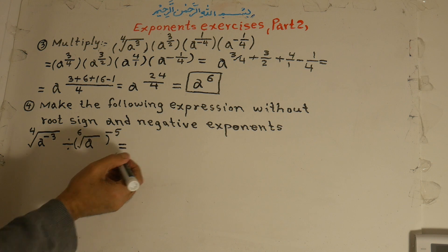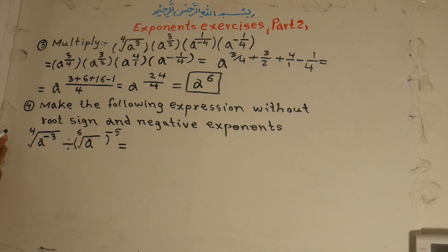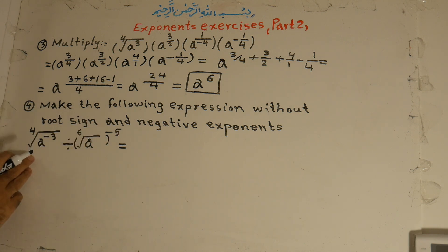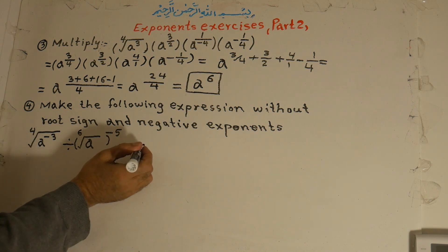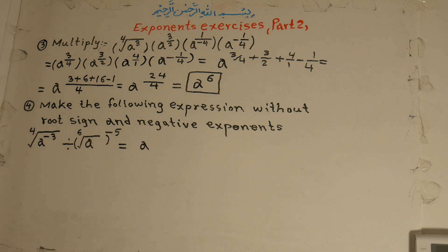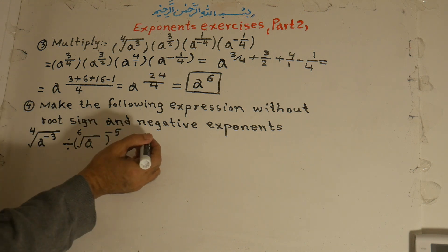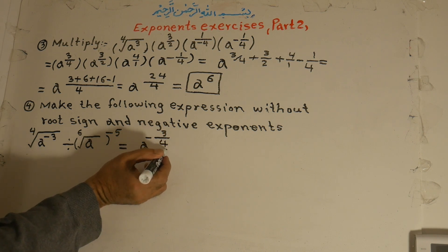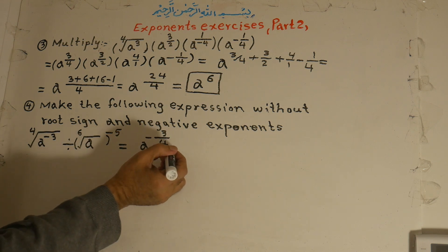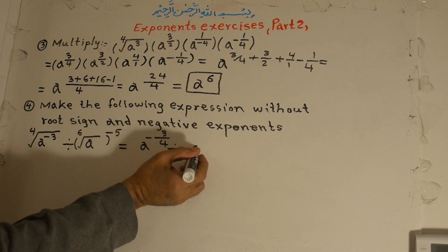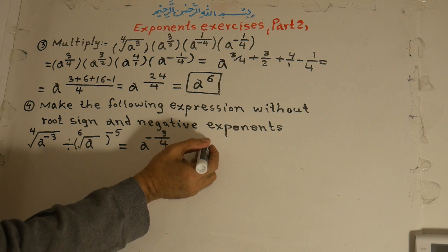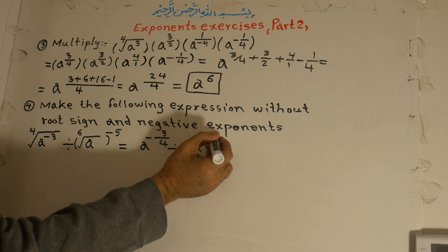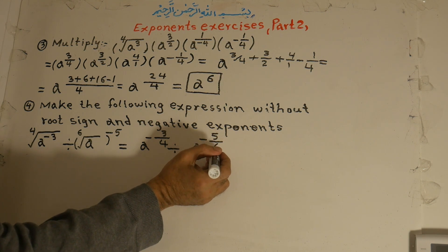We simplify this by making it without root and negative signs. We take it out of the root: it is equal to a to the power of negative 3 over 4 — where 3 is the power and 4 is the root — divided by a to the power of negative 5 over 6.